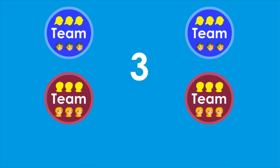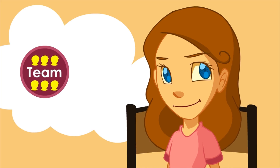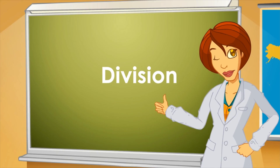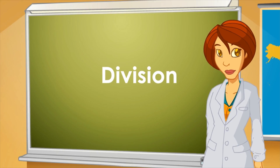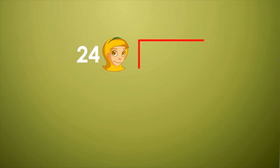I counted the faces inside each circle and... Ready! Each group will have 6 students. Very good! Congratulations! You've just solved a division problem. You've divided 24 children into 4 groups, each group with 6 children.